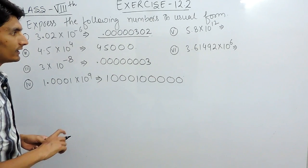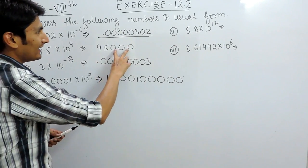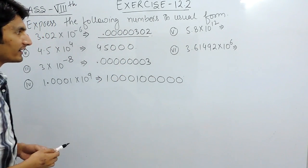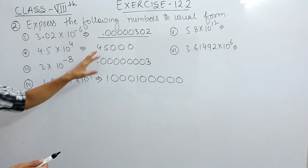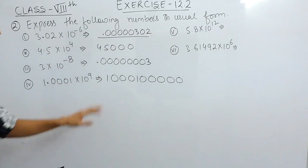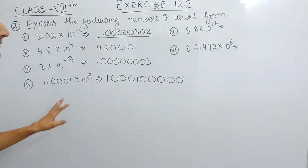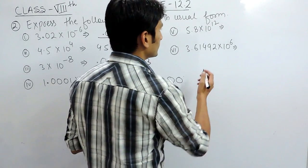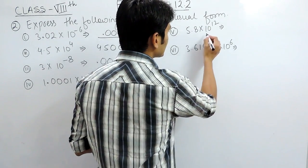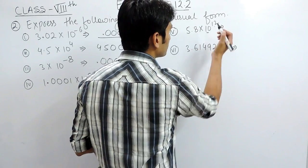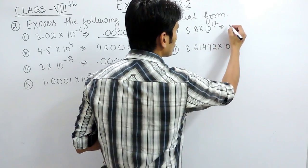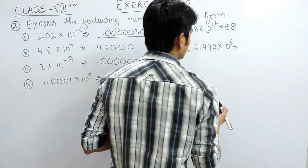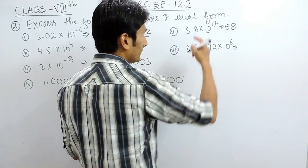One important thing: adding zeros does not affect the overall value of these numbers. Now let's solve the next part. The power is positive, so you have to shift the decimal to the right-hand side.